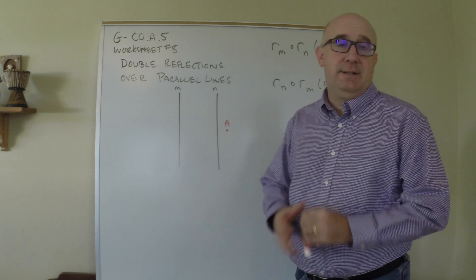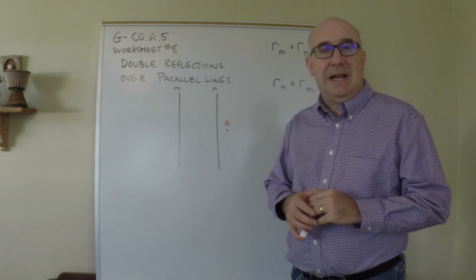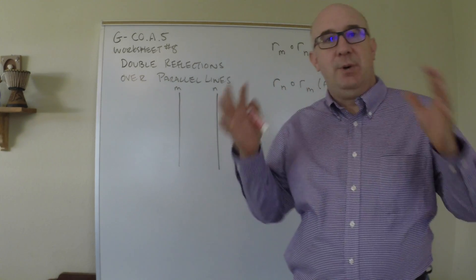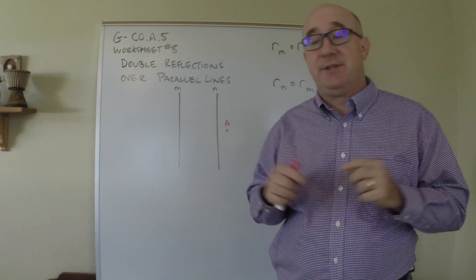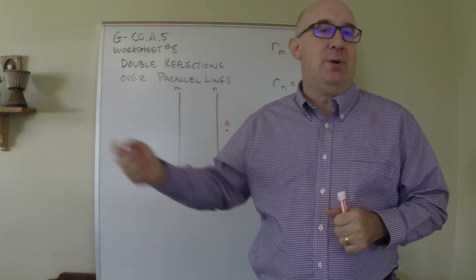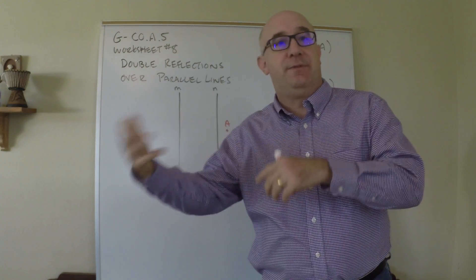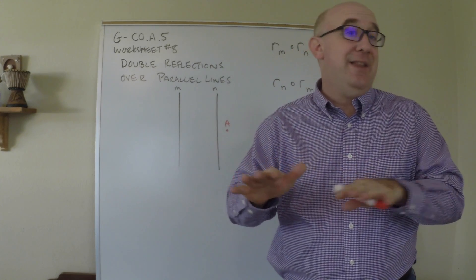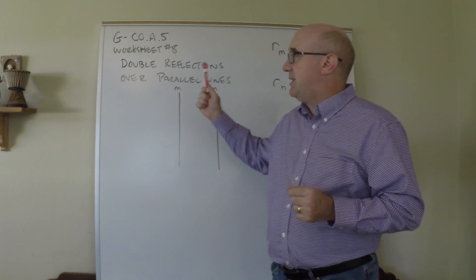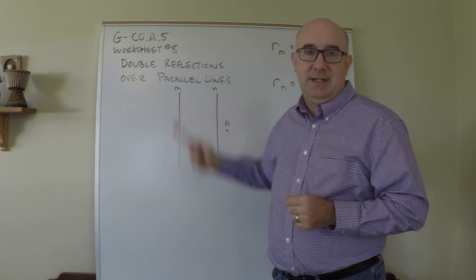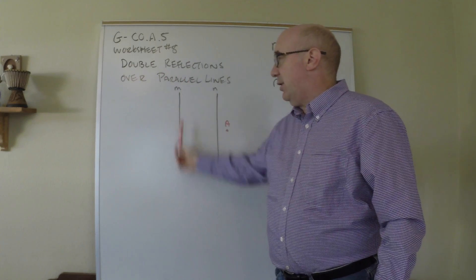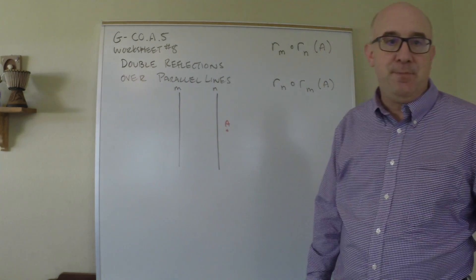Let's look at the idea of a double reflection over parallel lines. This is in the realm of composite transformations, where we're looking at doing more than one in a row — maybe translate then reflect, maybe rotate and then translate. We're going to look at the specific case of double reflecting: two reflections back to back over lines that are parallel to each other.